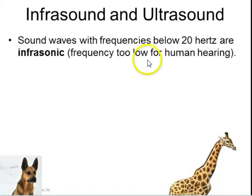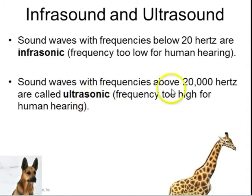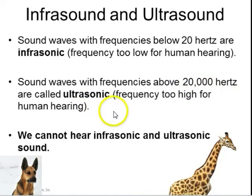Sound waves with frequencies below 20 hertz are called infrasonic or infrasound. Sound waves with frequencies above 20,000 hertz are ultrasonic or called ultrasound. Humans cannot hear infrasound or ultrasound. Although giraffes can hear frequencies in the infrasound below 20 hertz. And dogs can hear sounds with frequencies above 20,000 hertz, so ultrasound.